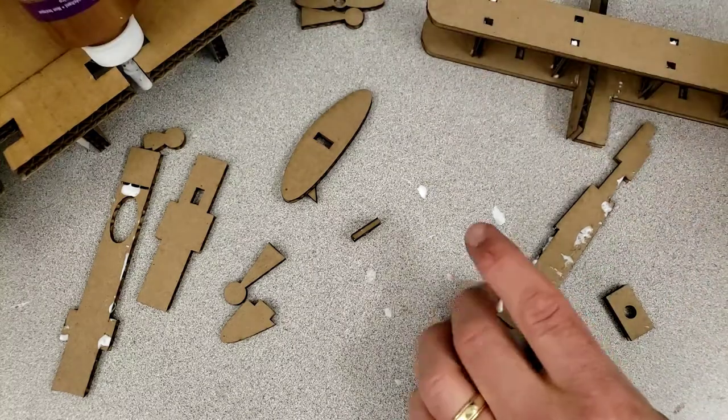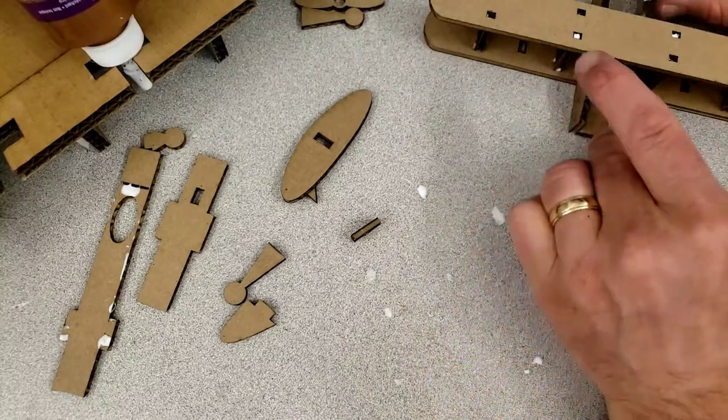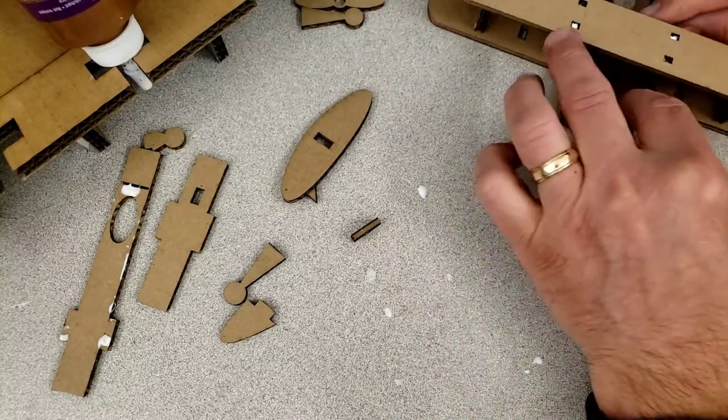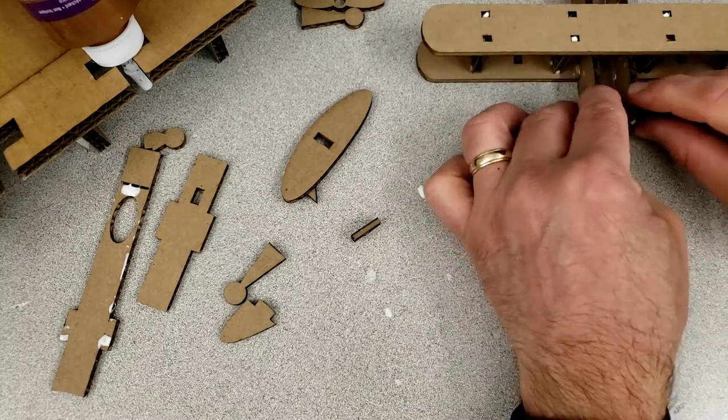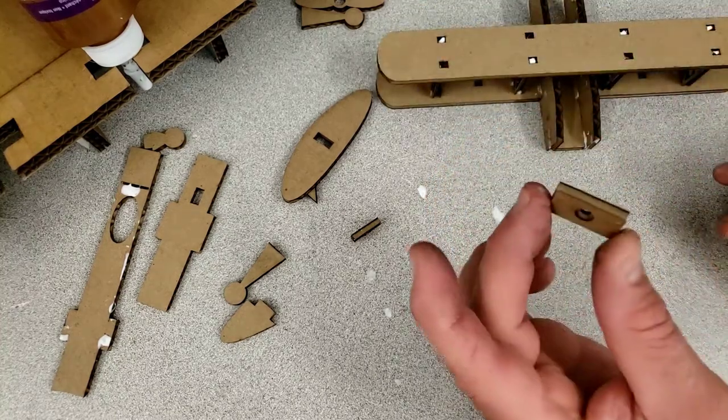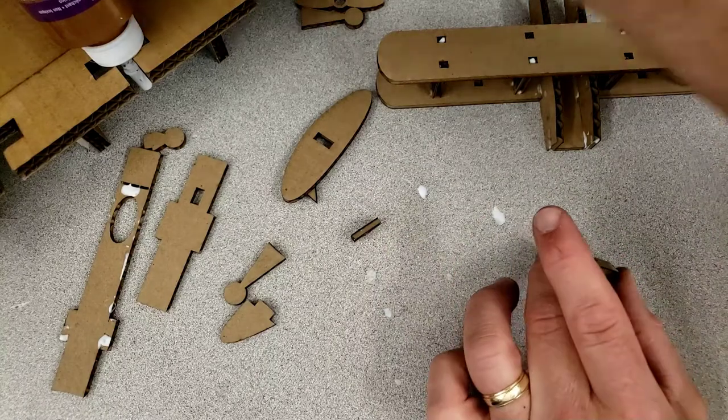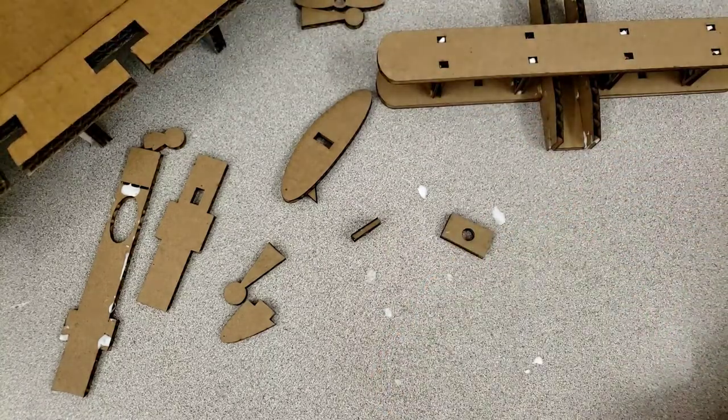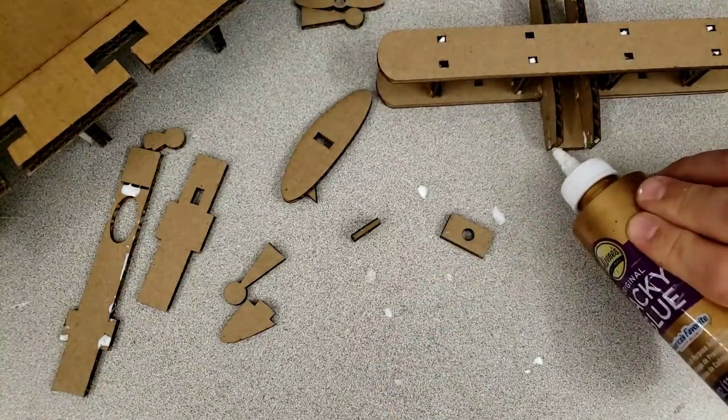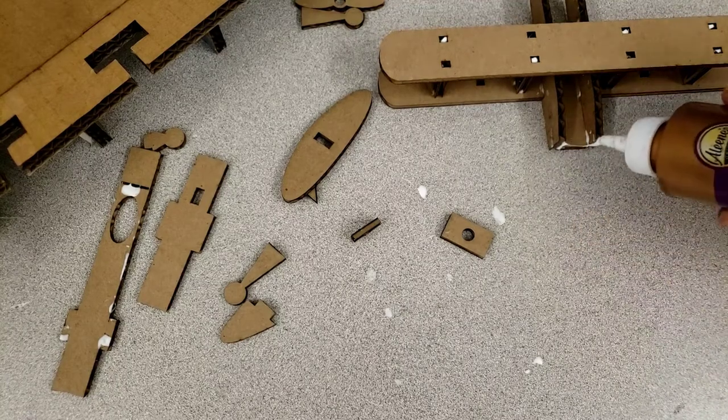The next piece to attach is this front piece. It totally covers this spot, so make sure you get glue on both of those, store your glue, and lock it in place.